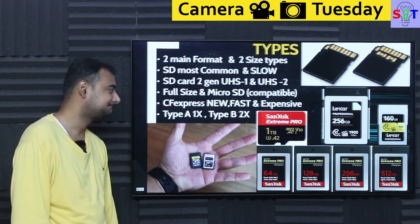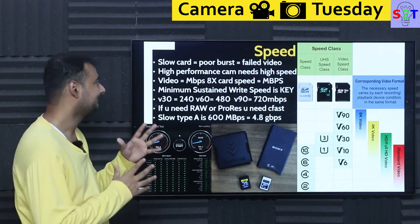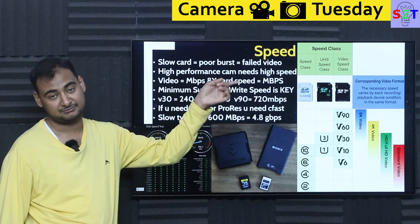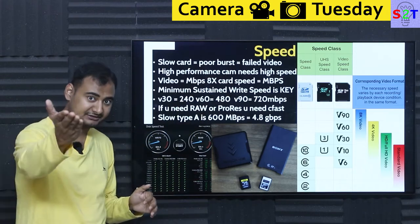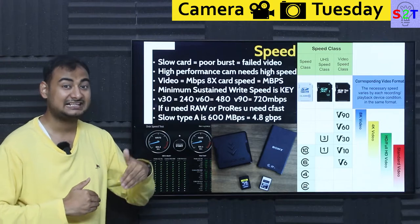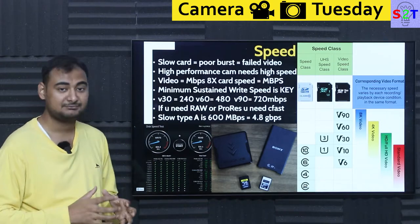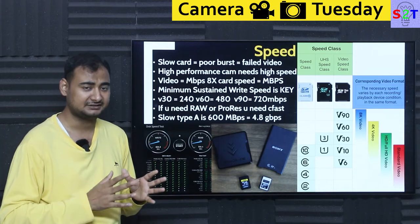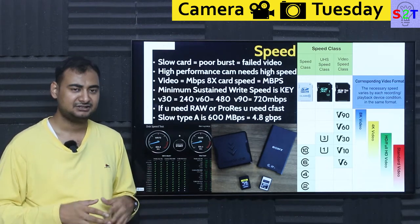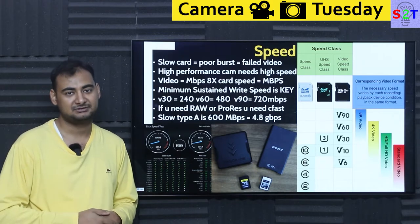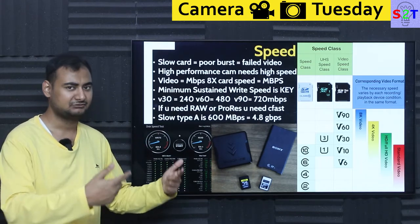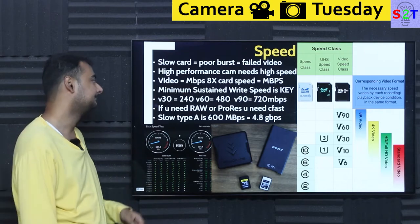Speed is one thing you may try to save money on, but a slow card equals poor burst performance and poor video performance — sometimes you can have a flat-out video recording failure. With a high-performance camera, like an A7 IV, A1, R1, or R3 — basically any camera around 2 lakh rupees or higher — you will absolutely notice a garbage card. It's like having a Ferrari engine with worn-down tires: it just won't feel right.